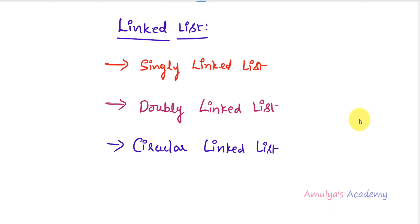Hello guys and welcome to Python programming tutorials by Amulyas Academy. We were discussing about data structures, specifically linked lists. We are discussing three types of linked list: singly linked list, doubly linked list, and circular linked list. We already discussed the singly linked list and its operations. Next we will talk about doubly linked list, its operations, and how to implement it in Python.